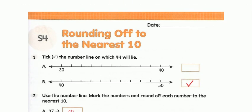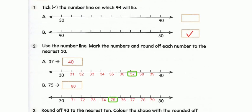Next, workbook exercise 4. Question 1: tick the number line on which 44 will lie. Since 44 lies between 40 and 50, we tick number line B. Question 2: use the number line to mark the numbers and round off each number to the nearest ten. First, mark the numbers between 30 and 40 as shown. The given number is 37 — mark it on the number line. The midpoint is 35, and 37 comes after 35, so we round off 37 to 40.